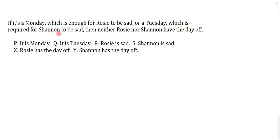If it's a Monday which is enough for Rosie to be sad or a Tuesday which is required for Shannon to be sad then neither Rosie nor Shannon have the day off. This is a question full of non-restrictive clauses. Because we have this comma which, we know immediately that these clauses can just be ripped out and symbolized independently with a conjunction.